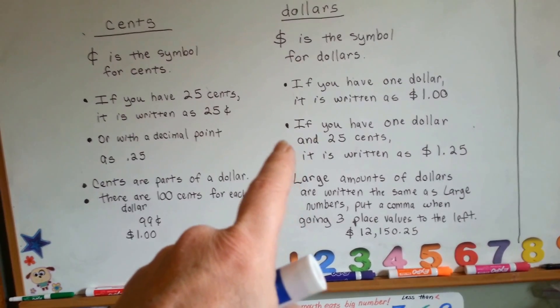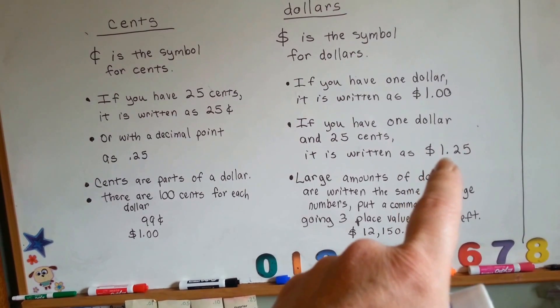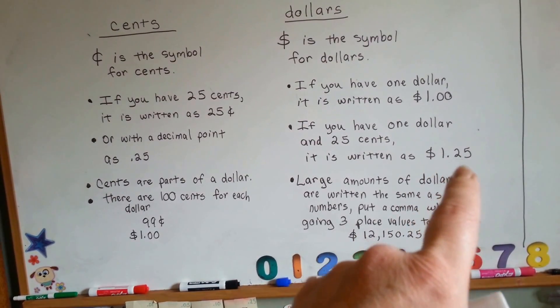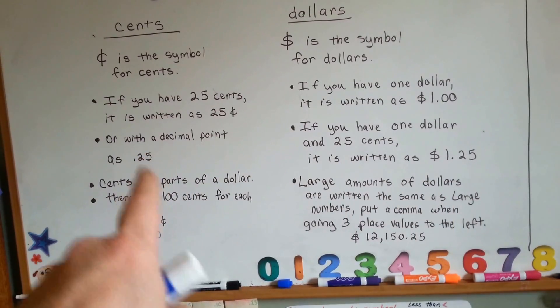If you have one dollar and 25 cents, it's written as $1.25. The 25 comes after the decimal point, like here for the 25 cents. See the point two five?